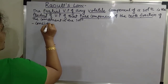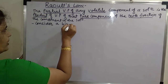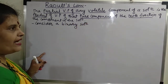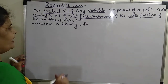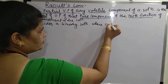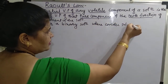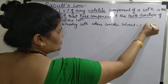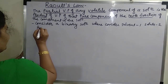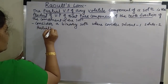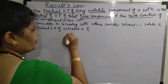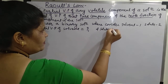Consider a binary solution. A binary solution is one which is prepared by adding one solute to the solvent. So a binary solution is prepared where I have considered the solvent as component one and the solute as component two. The partial vapor pressure of the solvent will be P1 and that of the solute will be P2.